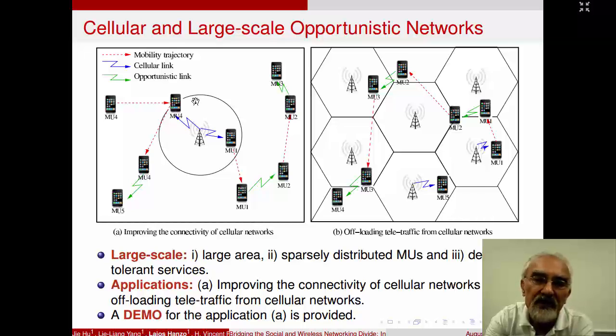And so in this slide, what we are witnessing is how, for example, mobile social networks can be used for improving the connectivity of cellular networks, where the base station has a limited range, as seen in the picture. And when some mobile stations enter its coverage area, then they can pick up delayed-tolerant messages. And then, as they encounter other mobiles during their travel, they are able to pass on the information of common interest.